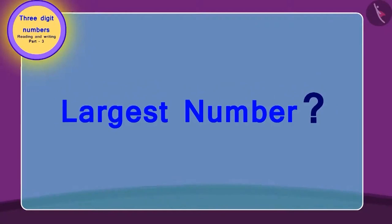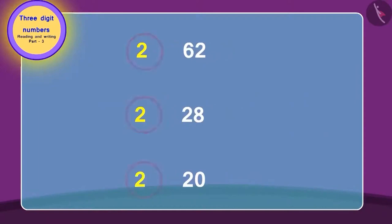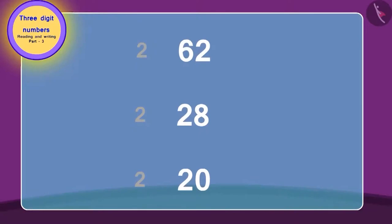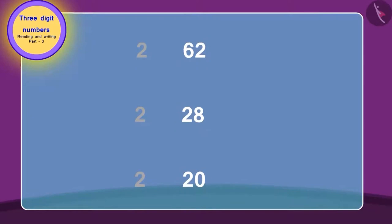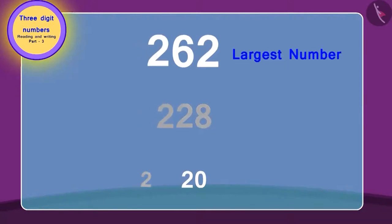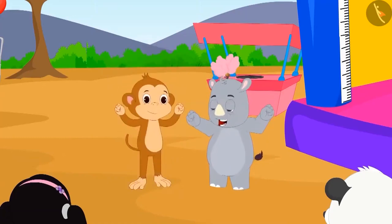Let's find out which team won the ticket by finding the largest number. First, look at the third digit of all three numbers and identify the highest. Here all the numbers start with the same value, so we look at the next two digits. 62 is the highest, 28 is next, and 20 is the smallest. So 262 is the largest and 220 is the smallest. Team 1 has won the ticket by reaching the highest number.